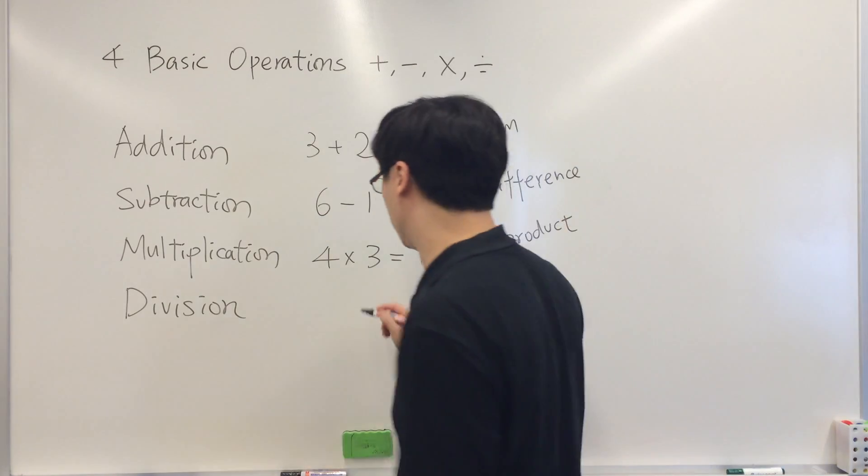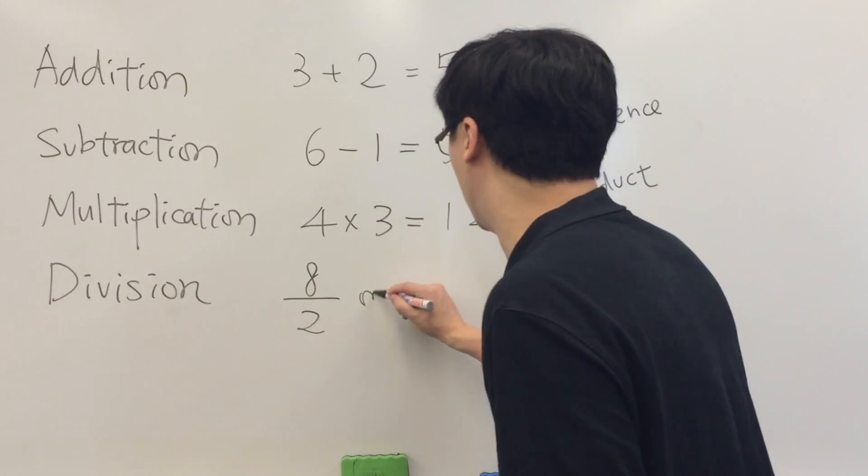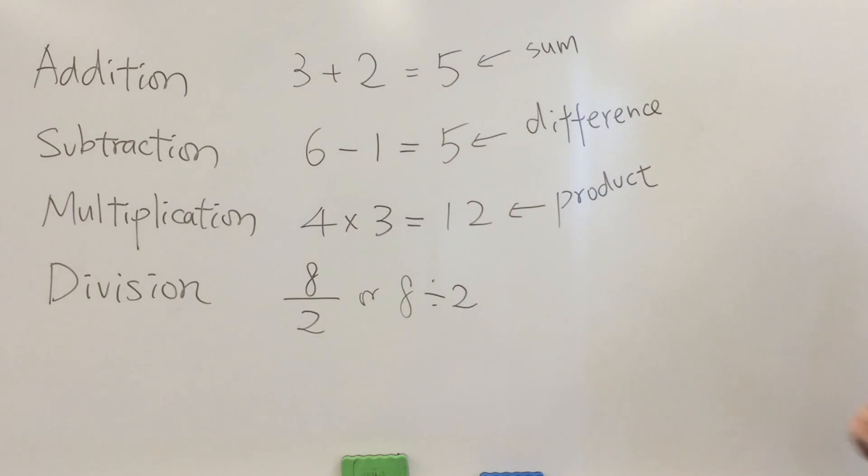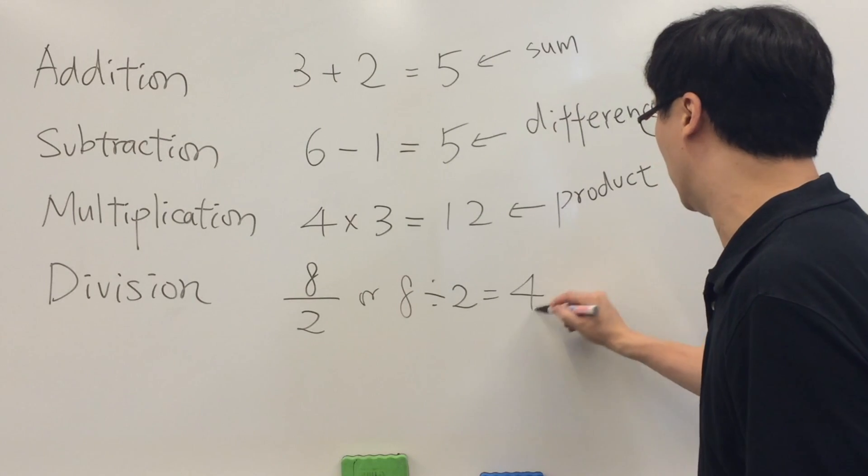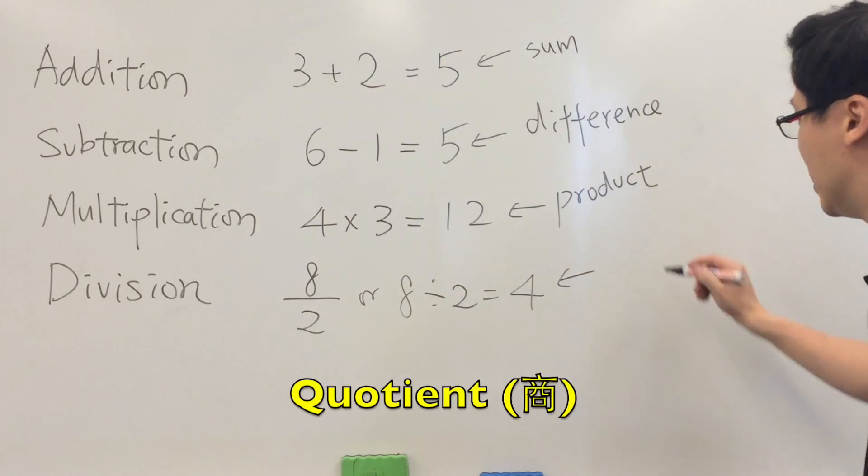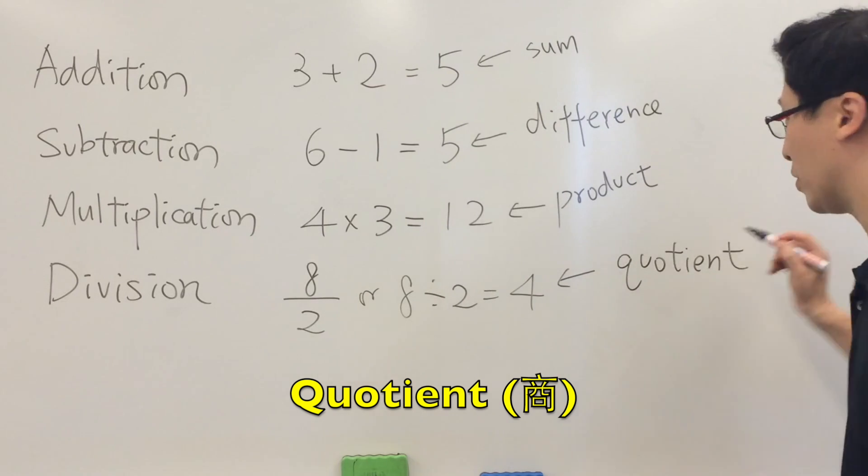Finally, for division, let's say 8 divided by 2. Or we can write it this way: 8 divided by 2 equals 4. This number actually we have a name for this, we call this the quotient of the division.